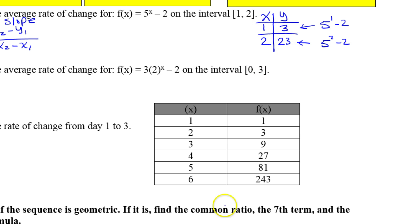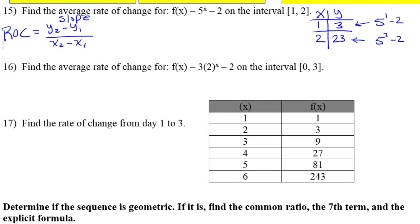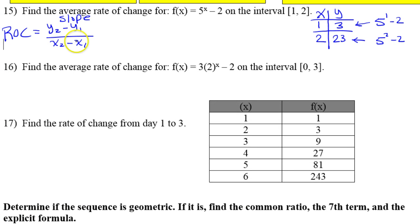Okay, so those are my x's and y's. So now as I do my rate of change, aka slope formula, I'm going to do y minus y over x minus x. So y minus y, that's going to be 23 minus 3, y minus y, over x minus x, 2 minus 1.